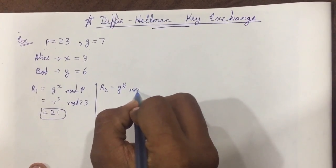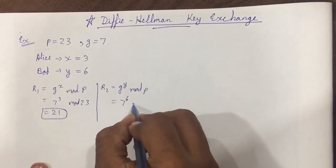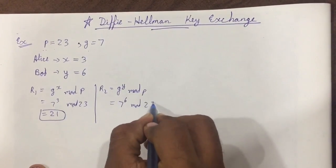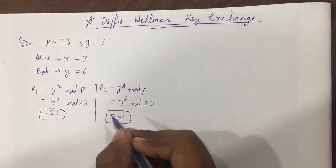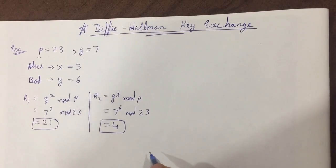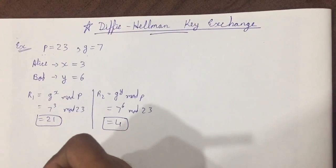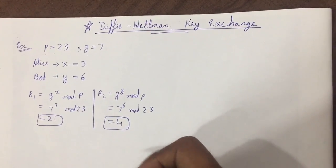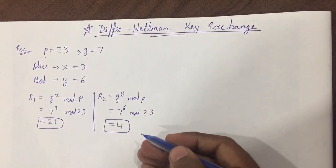So 7 raise to 6 mod 23 will give us the answer 4. So now what we have to do is check whether the key values of the sender and the receiver match or not.